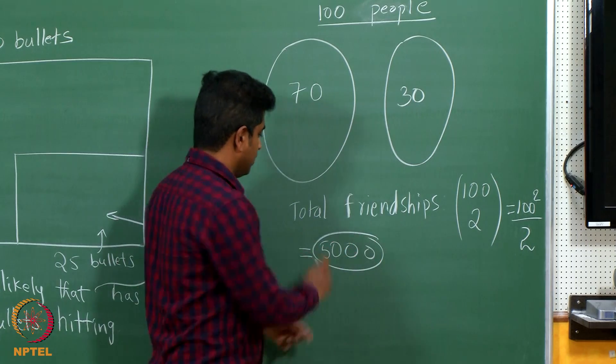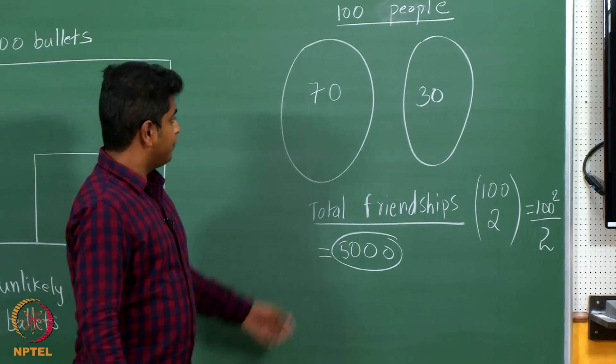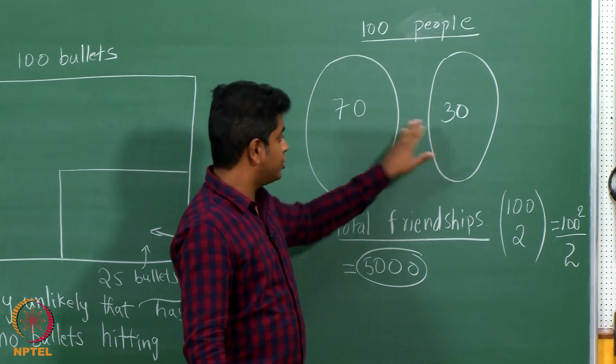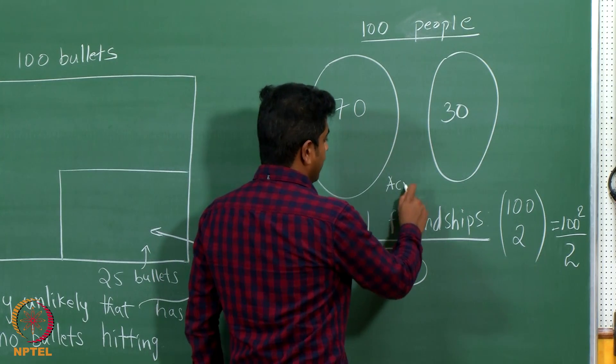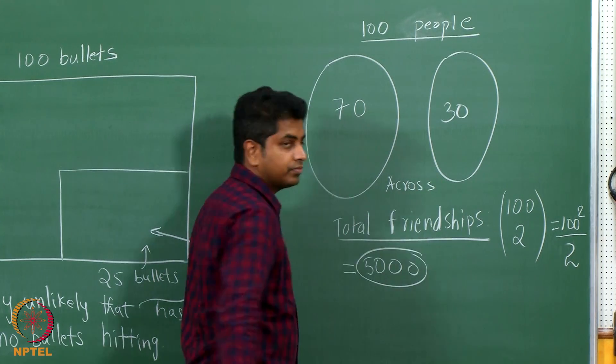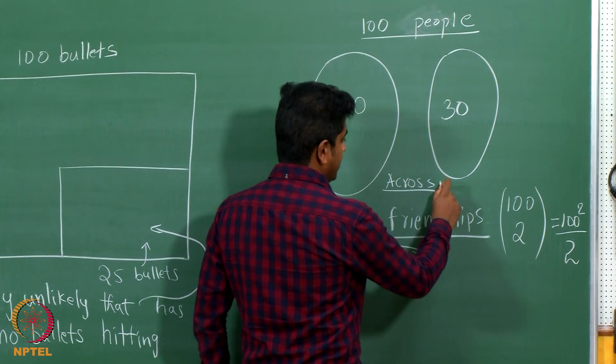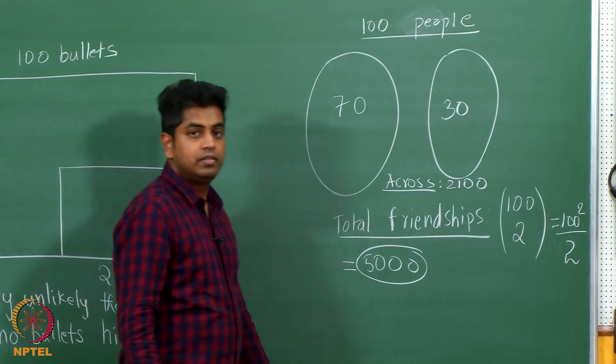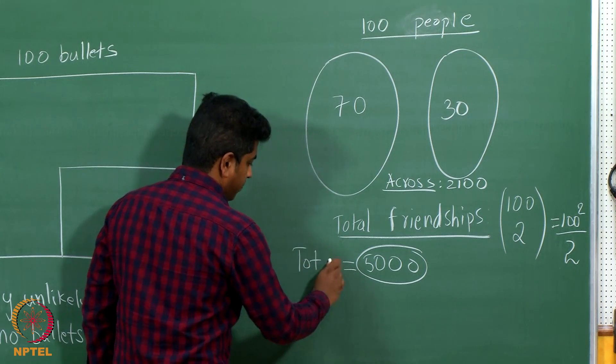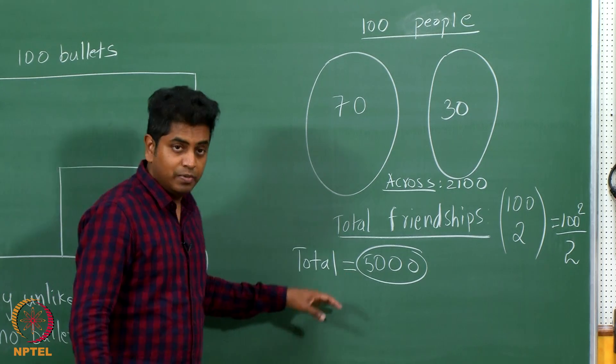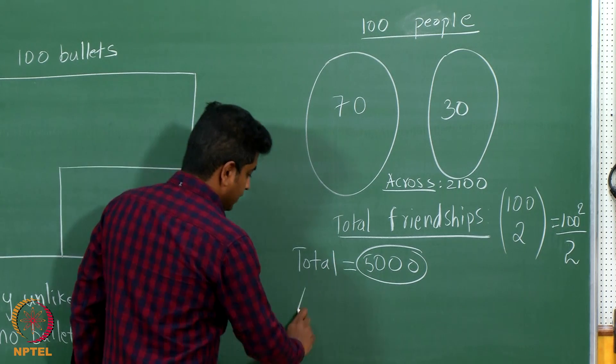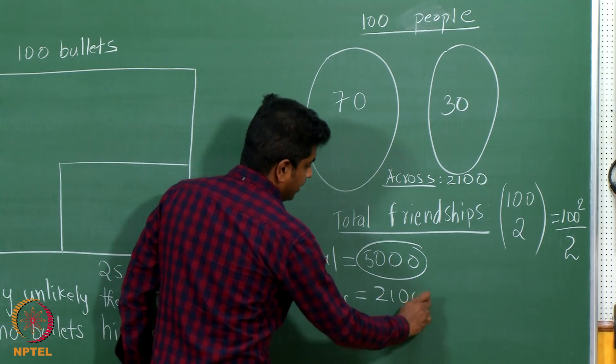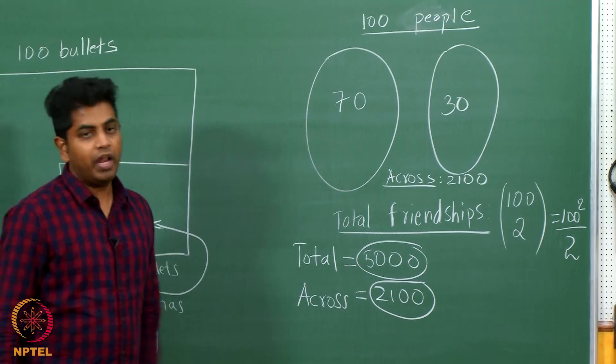These are the total possible friendships, out of which there are some friendships within, there are some friendships across. Let me see how many friendships are across. Across friendships are simply 70 into 30, which is 2100. Let us take a pause and understand what I have done so far. Total possible friendships are 5000, but the friendships across are 2100 in number.